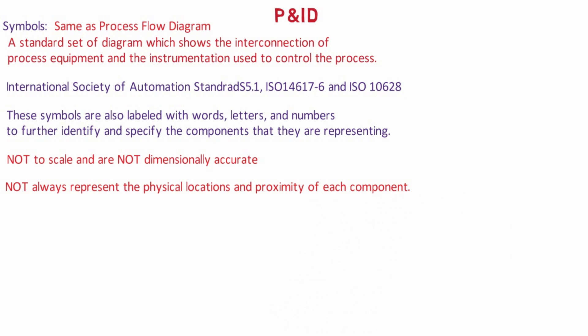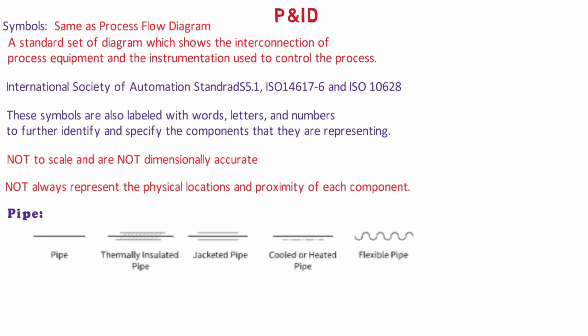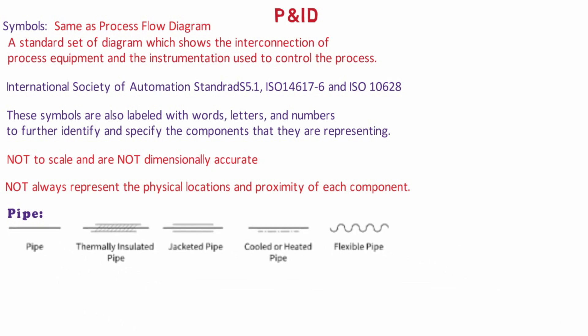Some of the standard symbols used in the P&IDs are shown in the figure. The process lines are the lines where the process media actually flows through. They are represented by different types of lines as you can see on your screen like normal pipe, thermally insulated pipe, jacketed pipe, cooled or heated pipe, and flexible pipe.